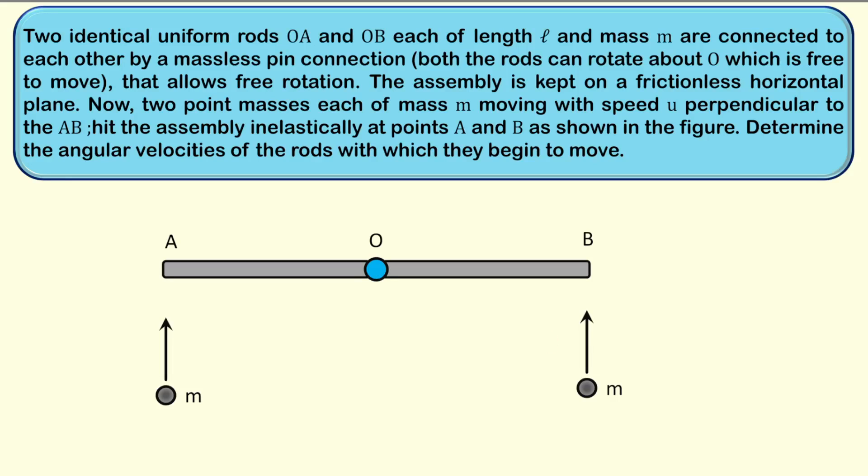Hello students, welcome to the solution of yet another conceptual and beautiful problem. In this question, two identical uniform rods of mass m and length L are connected by a massless pin joint. Both rods can rotate freely about this pin, which is free to move on the horizontal surface. Two point masses, each of mass m, collide with the endpoints of the rods with the same velocity u, and the collision is perfectly elastic. You have to determine the angular velocity of both rods just after the collision.